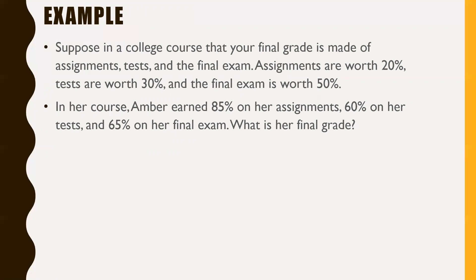Suppose in a college course that your final grade is made of assignments, tests, and the final exam. Assignments are worth 20%, tests are worth 30%, and the final exam is worth 50%. Those are your weightings. In her course, Amber earned 85% on her assignments, 60% on her tests, and 65% on her final exam. What is her final grade?